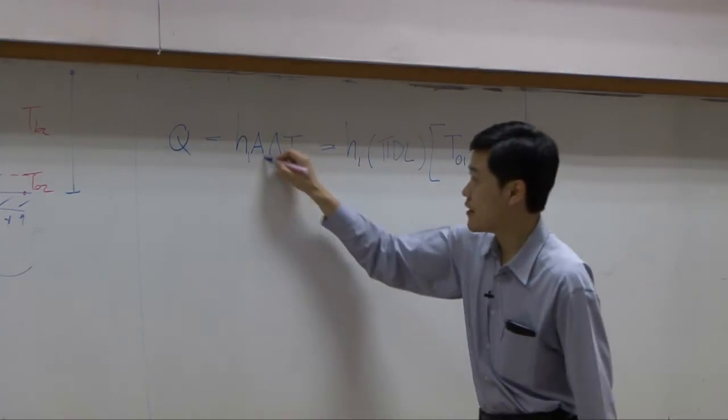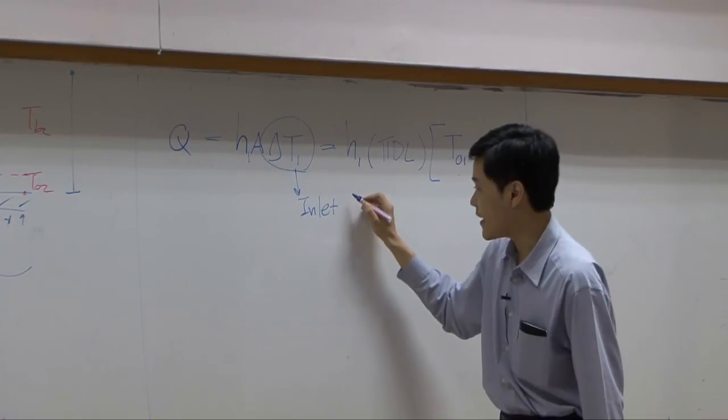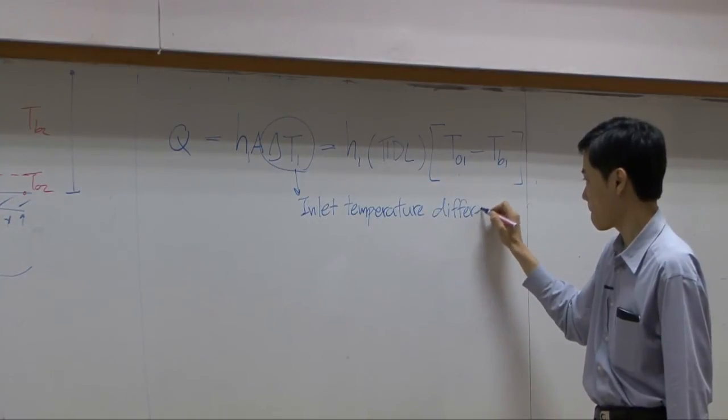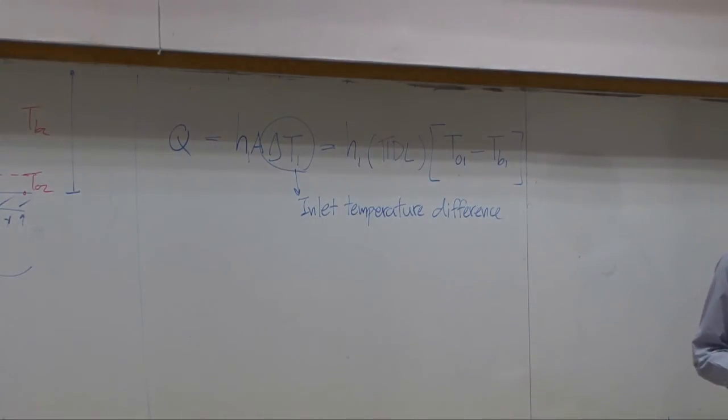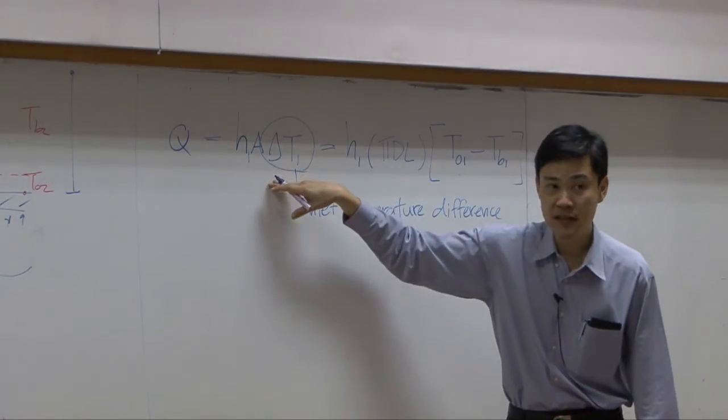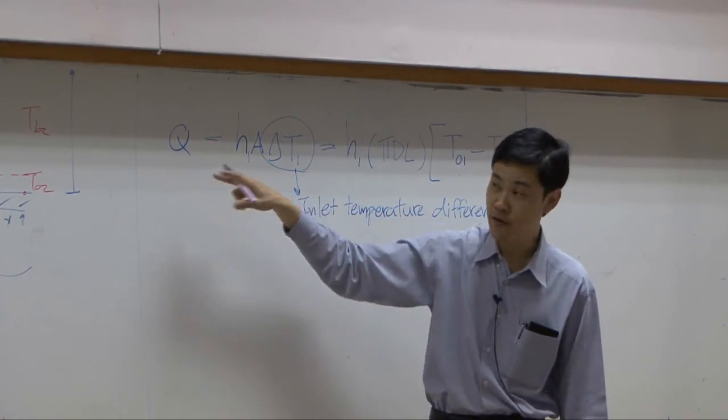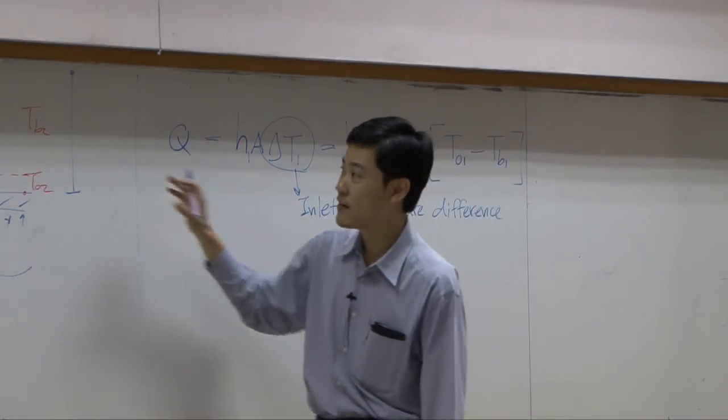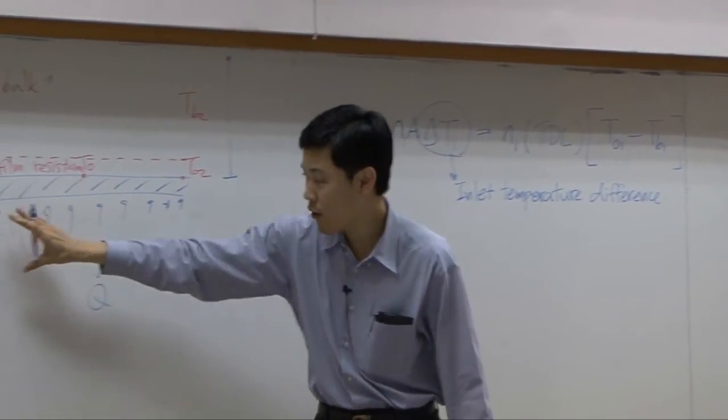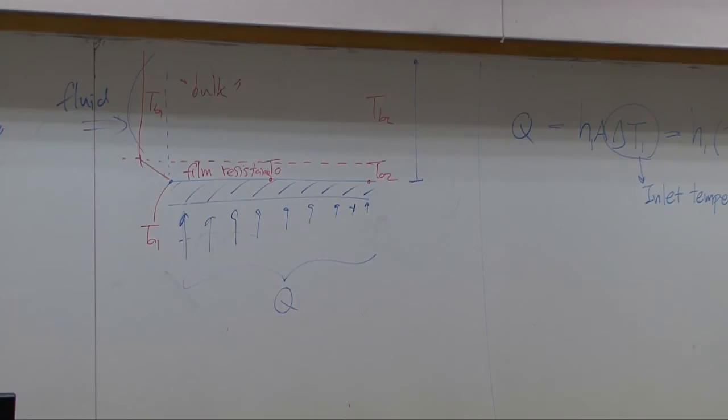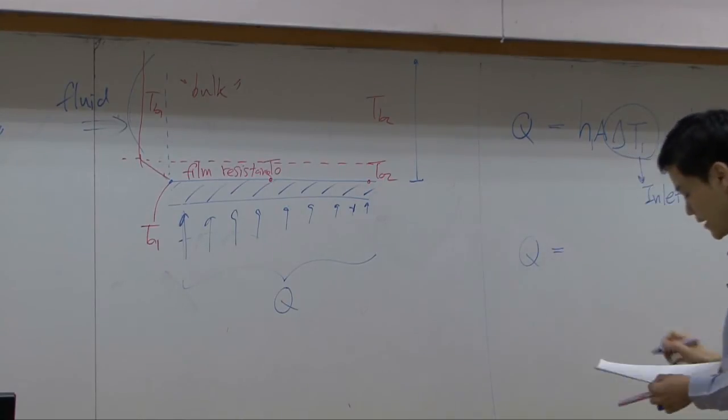Delta T1 is inlet temperature difference. If you use this equation, we can calculate total amount of heat transfer into the pipe based on inlet temperature difference only. So you do not care the temperature difference around here. Just calculate the whole Q here based on these two temperature difference. Of course, it doesn't look good, right? So this one is just the first one invented.